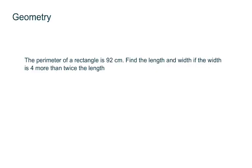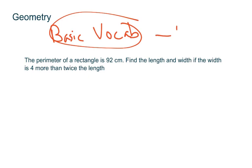Now let's talk about geometry. First, we have to know some basic vocabulary — complementary, supplementary, perimeters, angle sums of triangles, and so on. Once you know this vocab, we're doing the same thing: using placeholders and setting up equations to equal some number. The perimeter of a rectangle is 92 centimeters. Find the length and the width if the width is 4 more than twice the length.